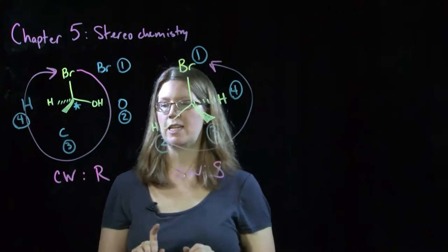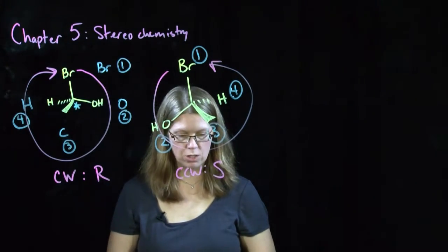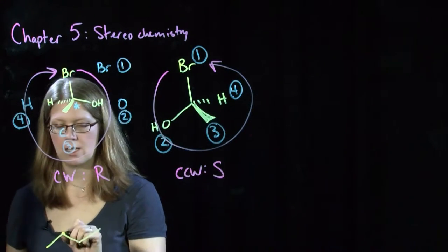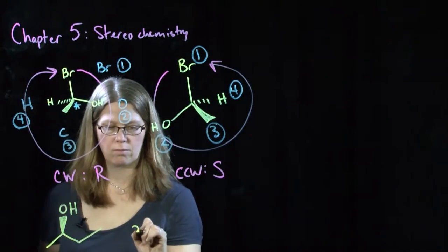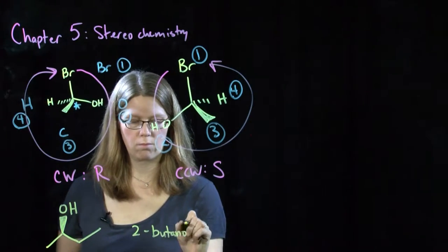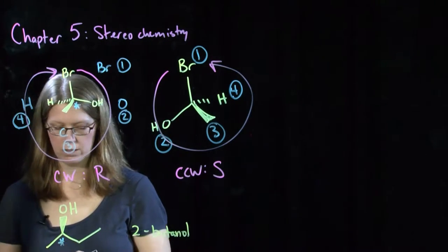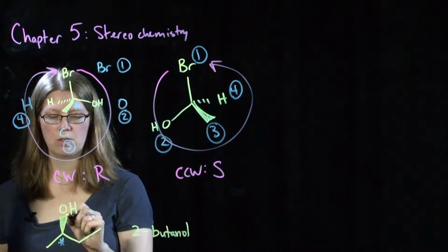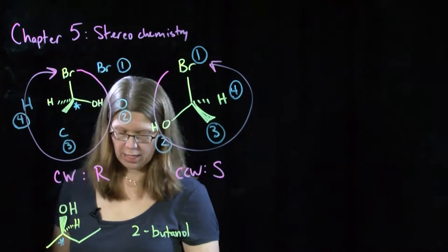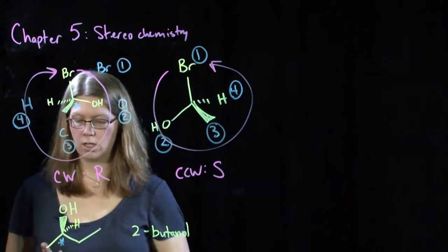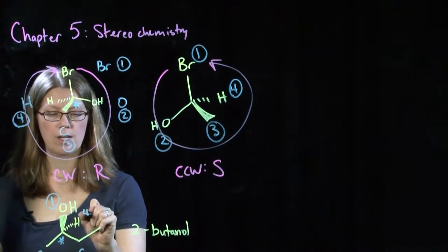You should be able to take every stereocenter and name it as either having an R or an S configuration. For example, take this 2-butanol — this is in fact a stereocenter because there are four different substituents on that carbon. Remember that just because only one hydrogen is shown doesn't mean it isn't there. We have an oxygen, a hydrogen, a carbon, and a carbon, so oxygen has the highest atomic number and hydrogen has the lowest — priorities one and four are already set.